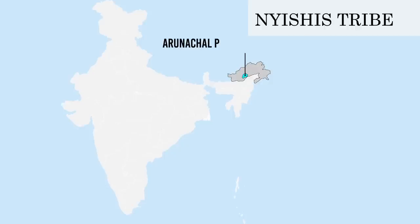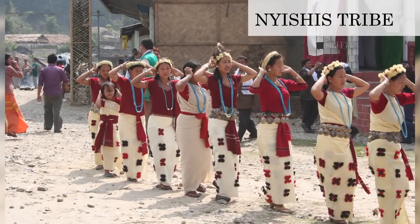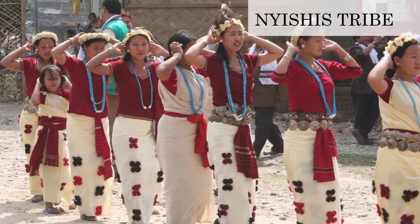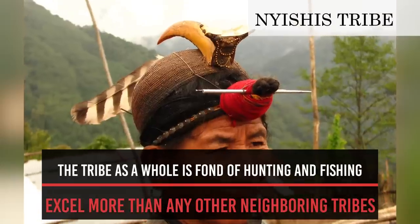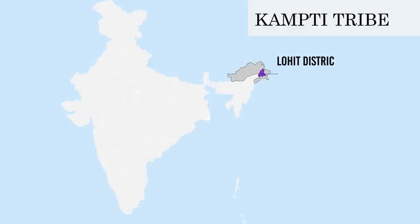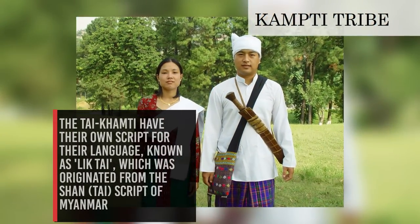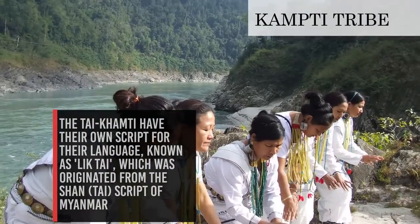Naishis Tribe: in Arunachal Pradesh, they constitute a large group of people inhabiting the major part of the Lower Subansiri district. They are of the Indo-Mongoloid group and their language belongs to the Tibeto-Burman family. The tribe as a whole is fond of hunting and fishing, excelling more than any other neighboring tribes. Kamti Tribe: they are a subgroup of the Shan people in the Lohit district in Arunachal Pradesh. The Thai Kamti have their own script called Liktai, which originated from the Shan Thai script of Myanmar.